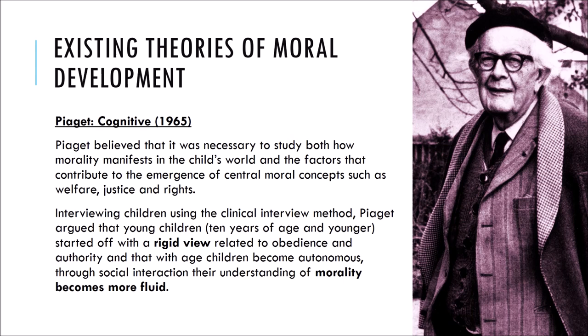Piaget believed it was important to study both how morality appears in the child and also the factors that contribute to the emergence of central moral concepts such as welfare, justice, and rights. Piaget argued that very young children have quite a rigid view of morals related to obedience and authority. But from about 11 years upwards, children become more autonomous because of social interactions, and their understanding of morality becomes more fluid — morality is changeable depending upon circumstance.